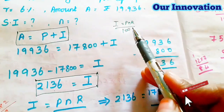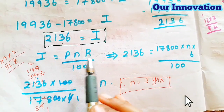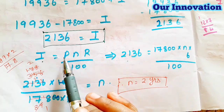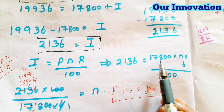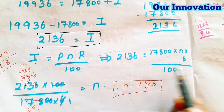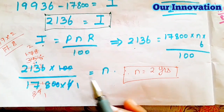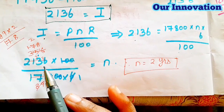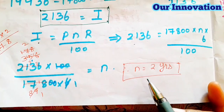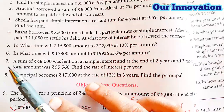Now substitute in the formula to find n. I = PNR/100, so 2,136 = 17,800 × n × 6 / 100. Solving for n, we get n is equal to 2 years.